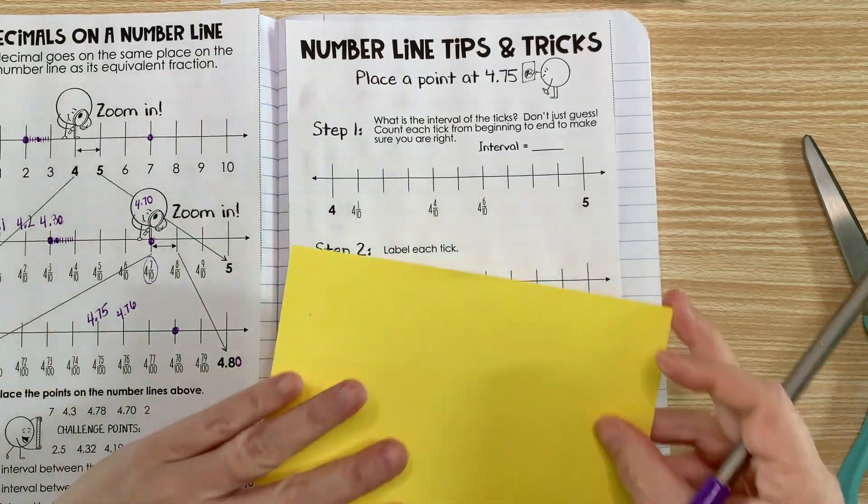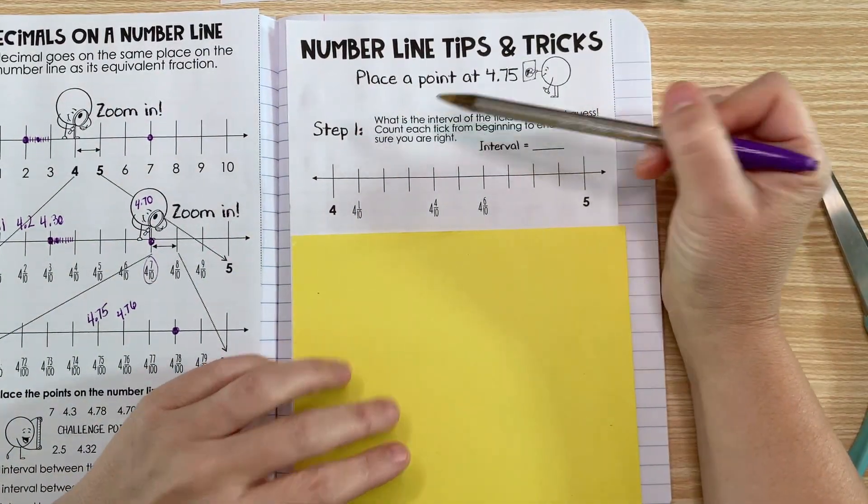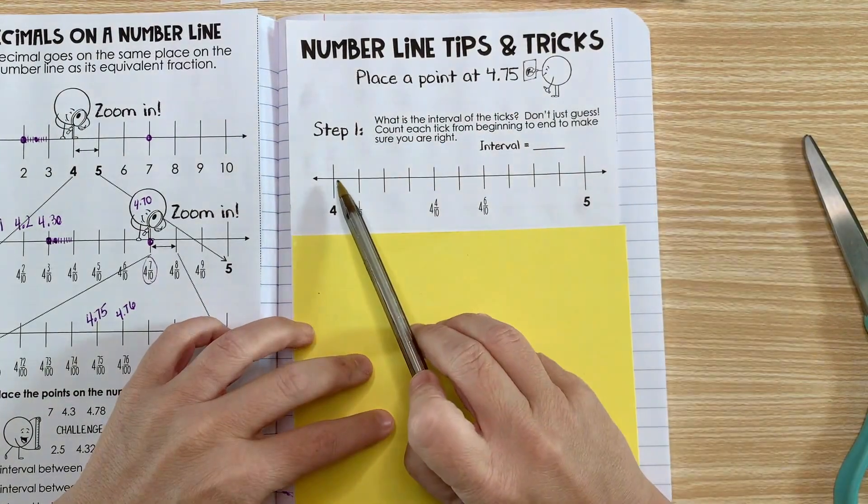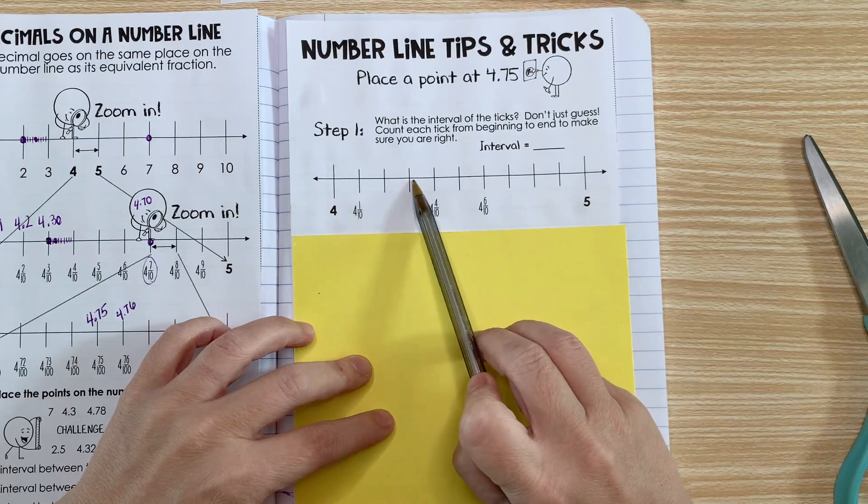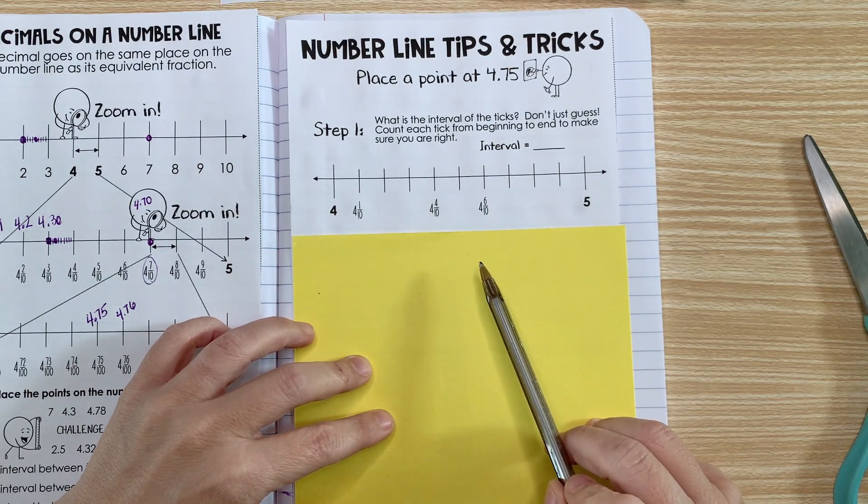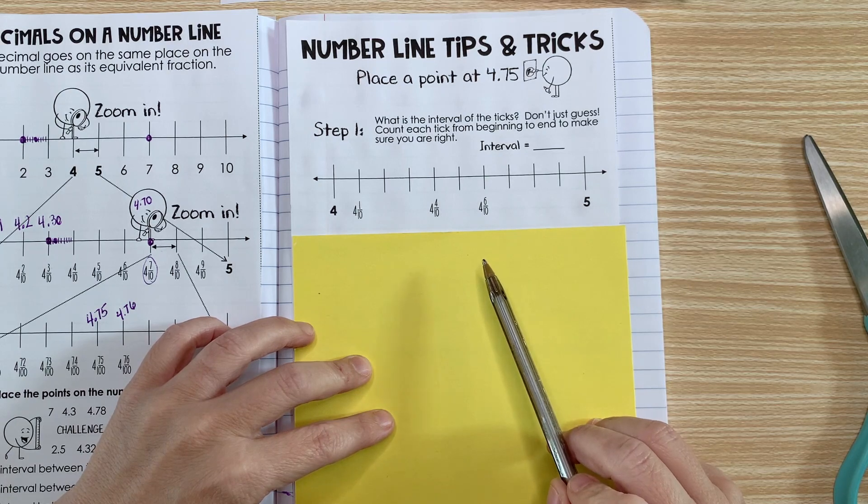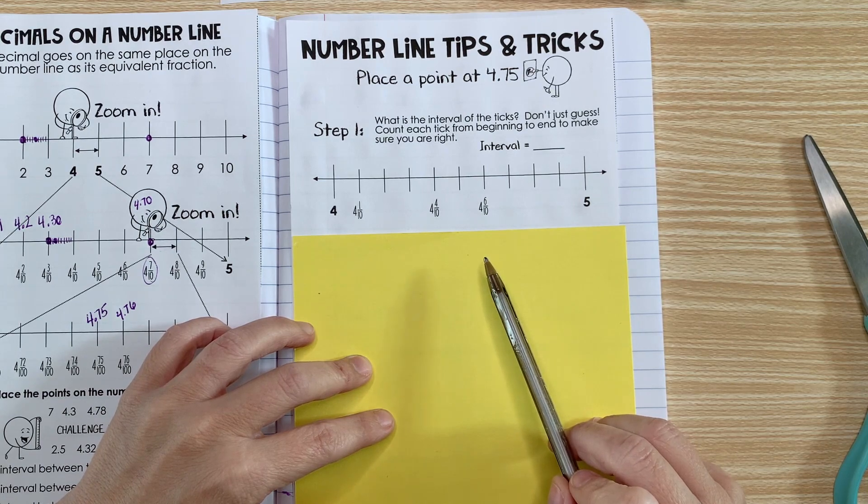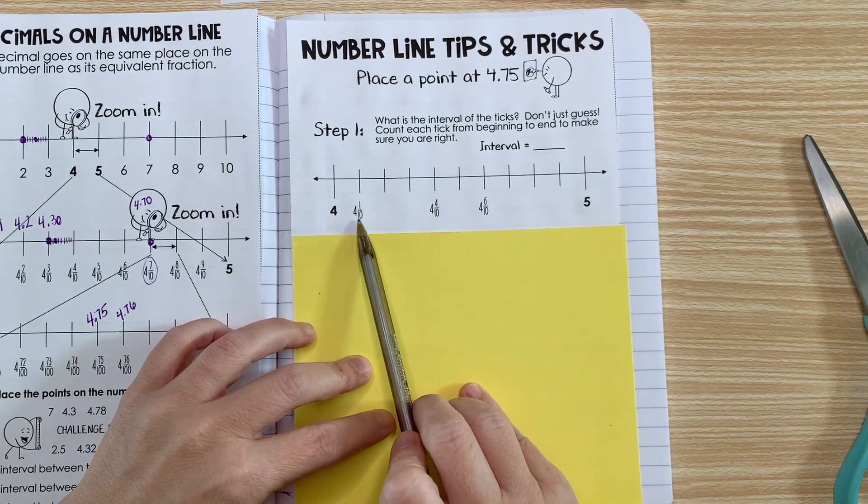Step one says what is the interval of the ticks? Here are the ticks, and what is the interval? Remember, the interval is what it's counting by. It says don't just guess, count each tick from the beginning to the end to make sure you're right.